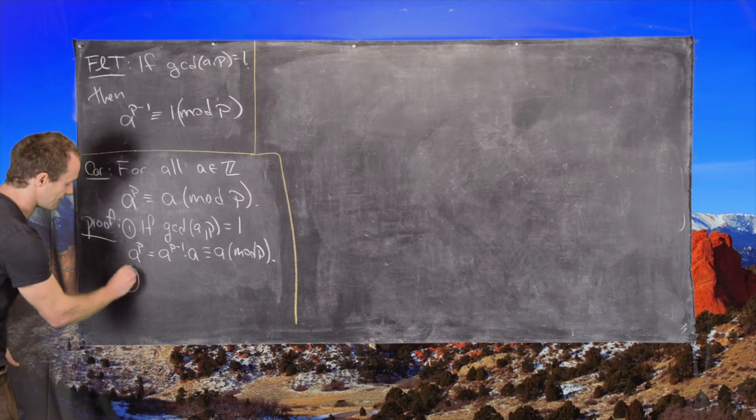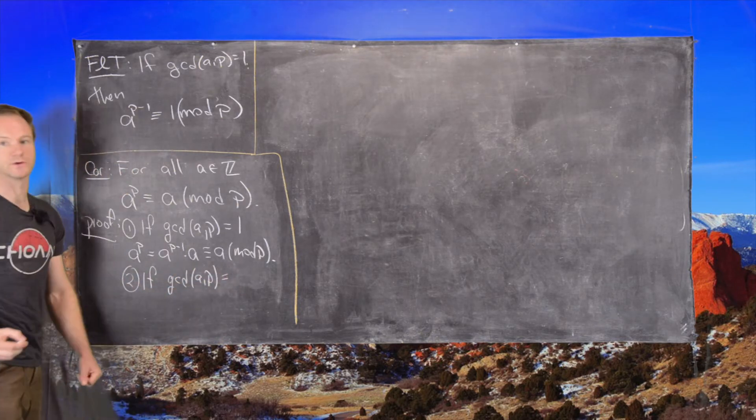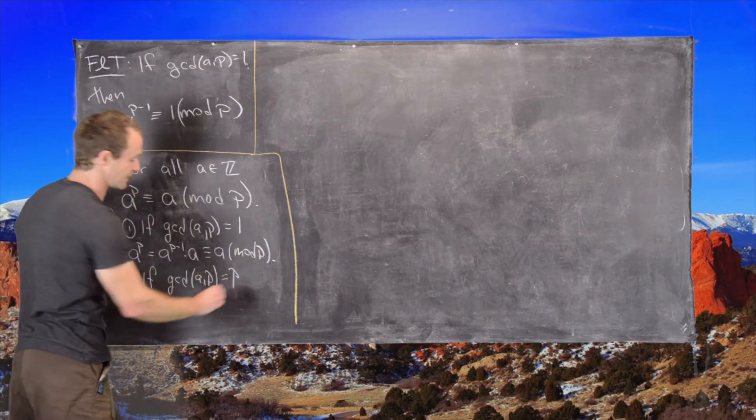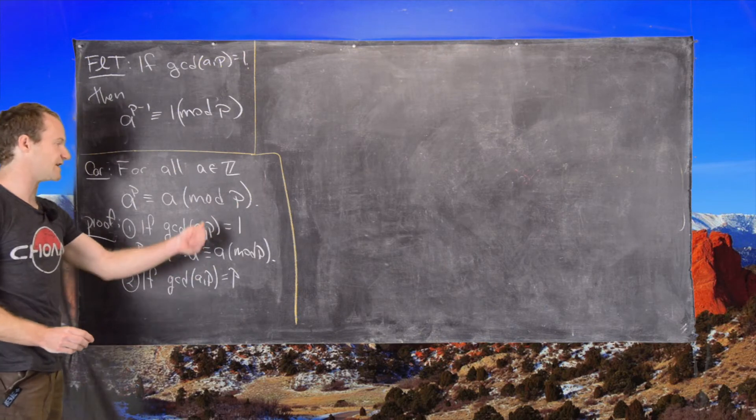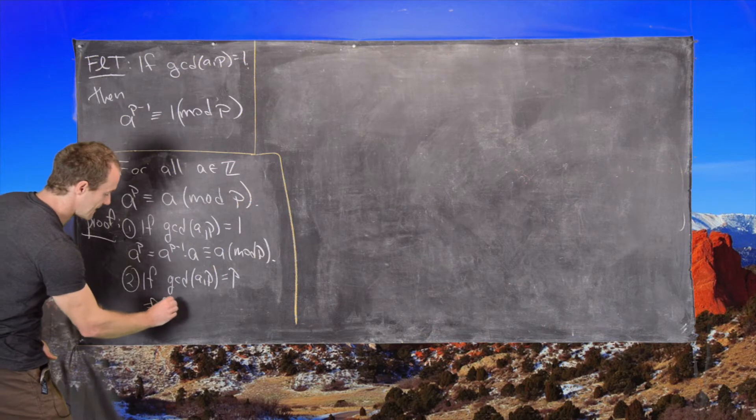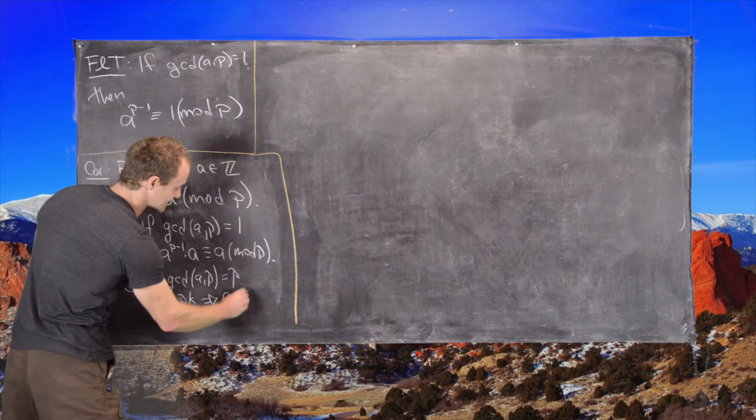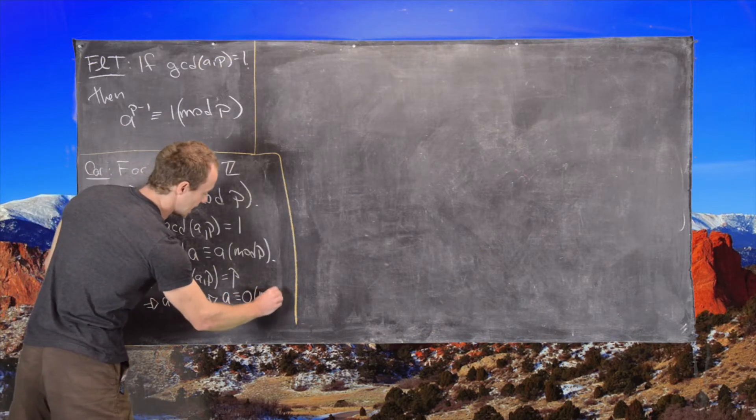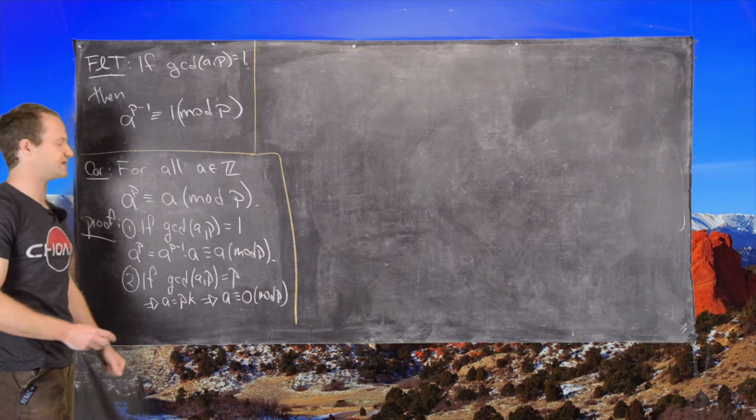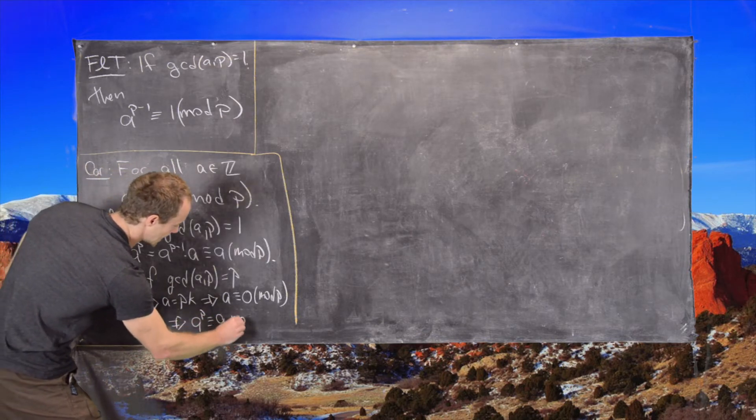And so now number two is if the GCD of A and P is not equal to 1, well, the only other possibility is that the GCD could be equal to P, because the only divisors of P are 1 and P. So that means that A equals P times K, which tells you that A itself is congruent to 0 mod P. But then 0 to the Pth power is congruent to 0 mod P. And so it follows very trivially that A to the P is congruent to A mod P.